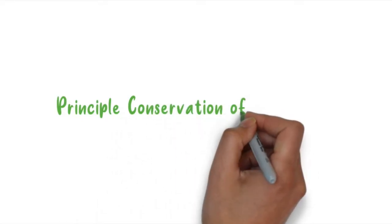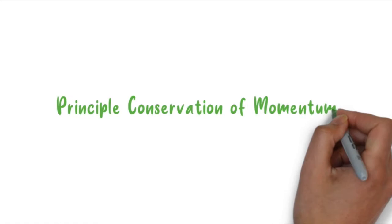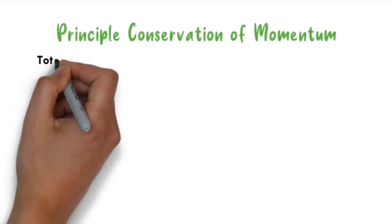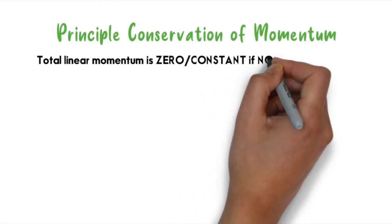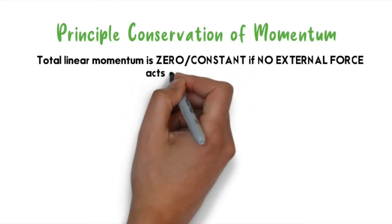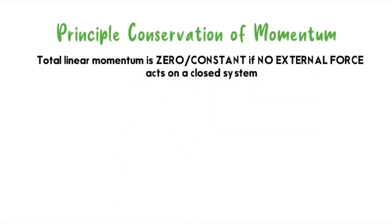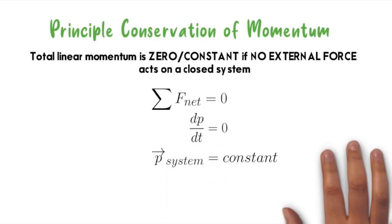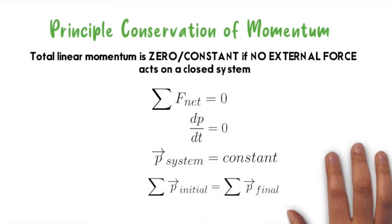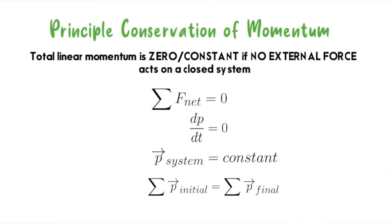So let's first talk about the principle of conservation of linear momentum. What does it mean? It states that the total linear momentum is zero or constant if no external force acts on a closed system, so F_net equals zero. When F equals zero, the rate of change of momentum is zero. This means p_initial equals p_final.